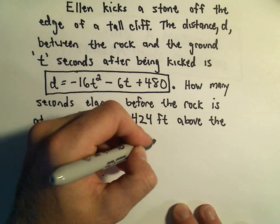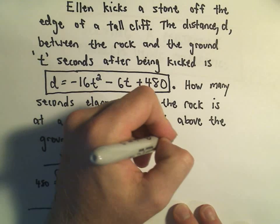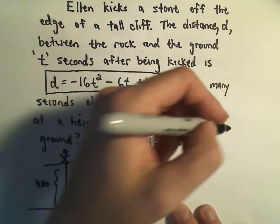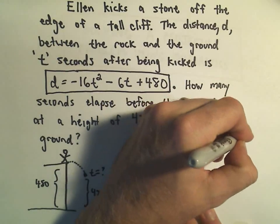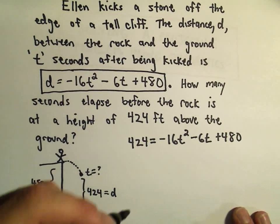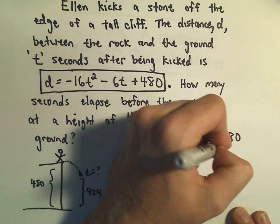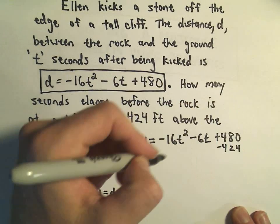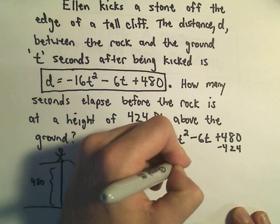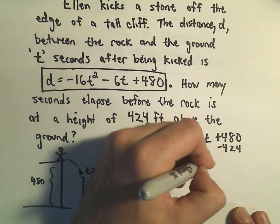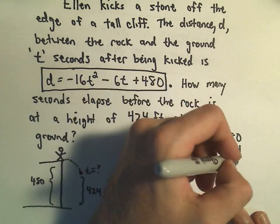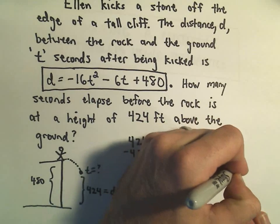So on the left side, now I've just got a quadratic equation that hopefully won't be completely miserable to solve. With quadratics we make one side zero. So I'm going to subtract 424 from both sides. So we have negative 16t squared minus 6t plus 480 minus 424, I believe that's going to give us 56.